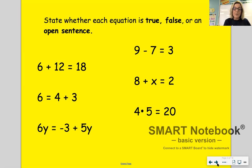So 6 plus 2 equals 18. That is a true equation. It contains numerical expressions that are put equal to each other and they truly do have the same value.